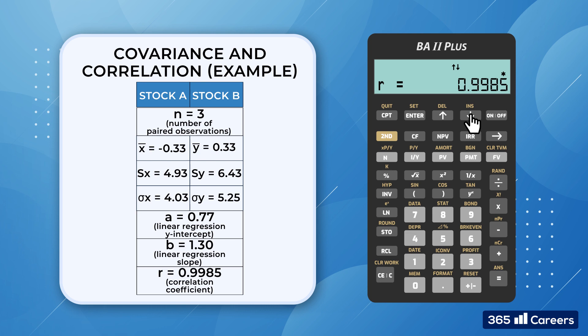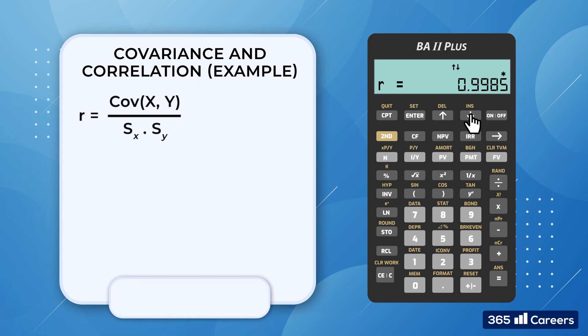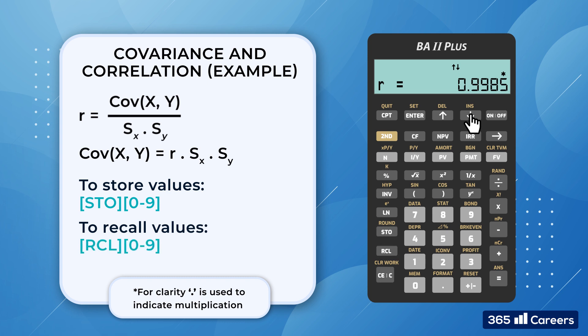What we could do instead is use the definition of correlation. As we know, it is equal to the covariance between the two variables divided by the product of their standard deviations. So in order to calculate the covariance, we multiply the correlation by the standard deviations of x and y. As we mentioned before, it's always useful to store any interim results that we can manipulate later instead of writing them down on paper. This saves a lot of time during the exam. So, we store the correlation coefficient in register 1, by pressing store and number 1.